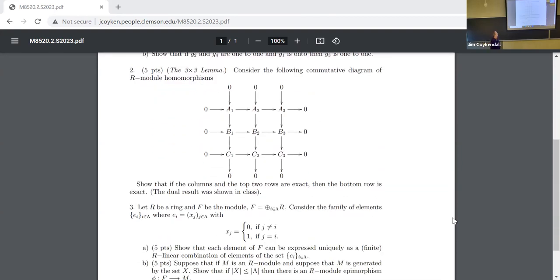The three-by-three lemma, this is a bigger, sort of a different version of this. Suppose that you have a commutative diagram. So all these A_i's, B_i's, and C_i's are R modules. Show that if the columns and the top two rows are exact, then the bottom row is exact. I am going to show you that if the columns and the bottom two rows are exact, then the top row is exact.